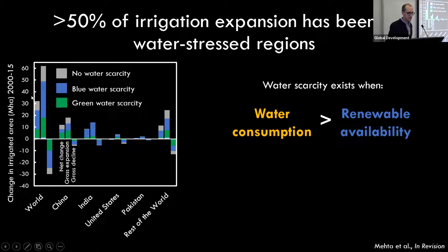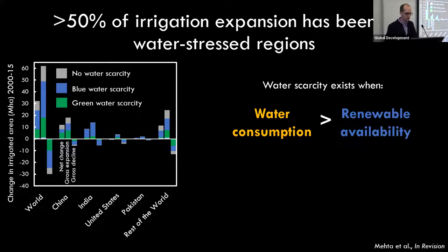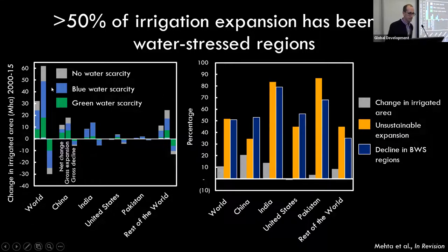Looking at irrigation changes grouped by country and water scarcity category — with columns showing net change, gross expansion, and gross decline — we estimate that globally a little more than 50% of gross irrigation expansion has occurred in places where conditions of water scarcity and water stress already existed. Some of the largest increases in irrigation are in northern India and northeast China, where water scarcity issues and freshwater depletion are already known problems.